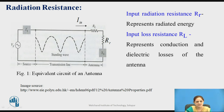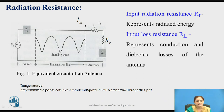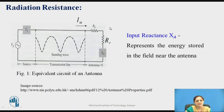Consider the equivalent circuit of an antenna. It has an input part and an output part. When the antenna is at the output side, the guided wave is radiated into free space. Electromagnetic energy from the source is transmitted through the transmission line as a standing wave. The input resistance Rr represents radiated energy, while the input loss resistance Rl represents conduction and dielectric loss of the antenna. The input reactance XA represents the energy stored in the field near the antenna.